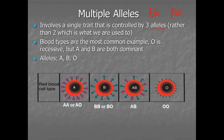The most common type of multiple allele, and probably the only one we'll see in this class, is blood types. Blood typing has one trait, one gene for blood type, but three alleles. You can have an A, a B, or an O allele.